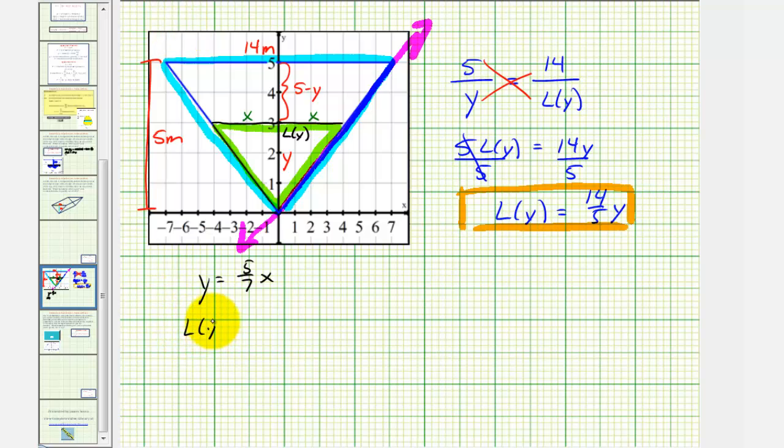So if L(y) equals 2x, of course this is not a function of y. But if we solve this equation here for x by multiplying both sides by 7/5, we'd have (7/5)y = (7/5)(5/7)x. So here notice how x = (7/5)y. So L(y) would equal 2 times x or 2 times (7/5)y, which is the same result of (14/5)y. So there are a couple of ways to find L(y).